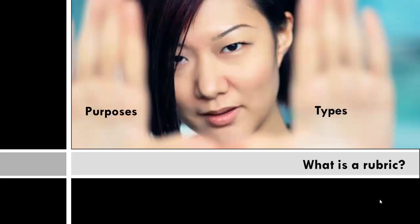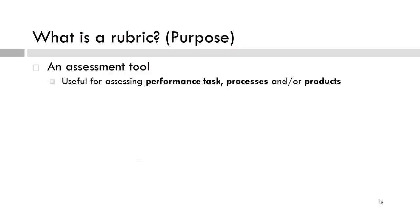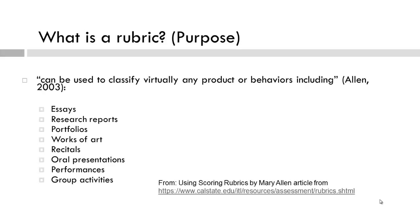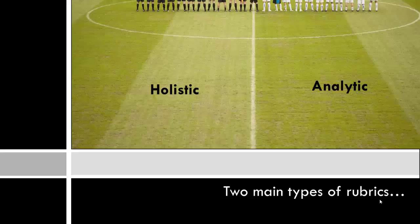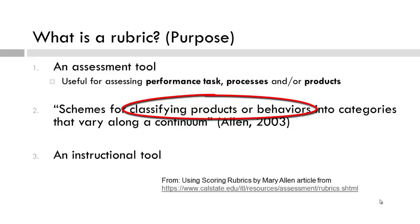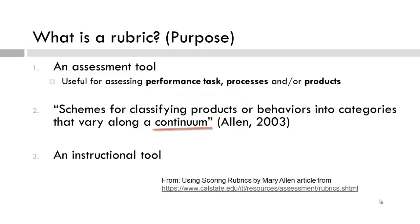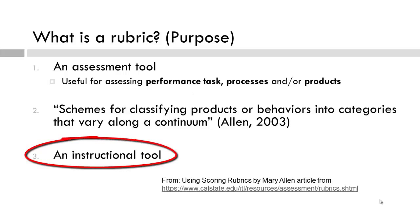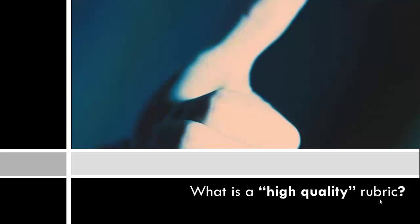In the previous video, we explored two types of rubrics defined by their purpose. A rubric is a tool that is extremely useful for assessing authentic learning tasks. Depending on the authentic learning task, a holistic or analytic rubric could be used to classify products or processes along a continuum of learning, and might possibly serve as an instructional tool if the rubric is of high quality.